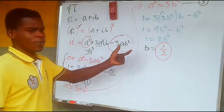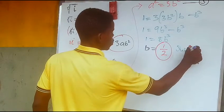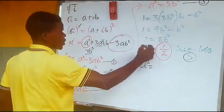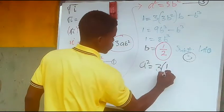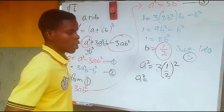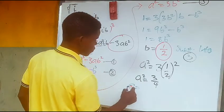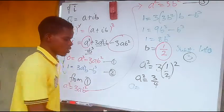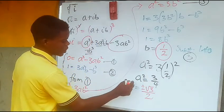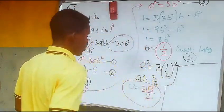Now we have the value of b. Let's substitute b equals one over two into equation three to solve for a. That gives a squared equals three times one over two squared, which equals three over four. So if a squared equals three over four, then taking the square root of both sides, a equals plus or minus the square root of three over two.